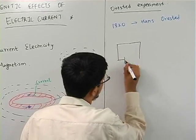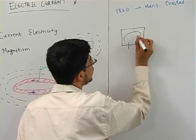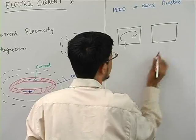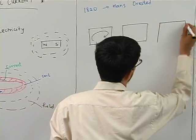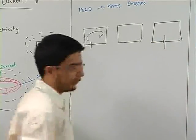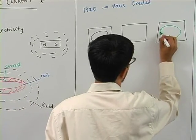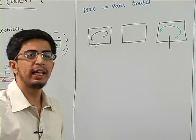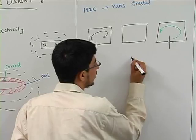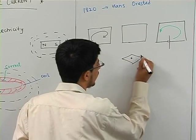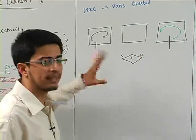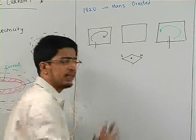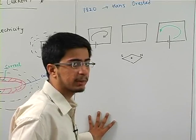In school life, we have a circuit where current flows. I have three conditions — three coils: one with current flowing, one with no current flow, and one with current flowing in the opposite direction. If I have a magnetic needle with a north pole and south pole placed near the coil, when there is no current flow, the magnetic needle will remain stationary.